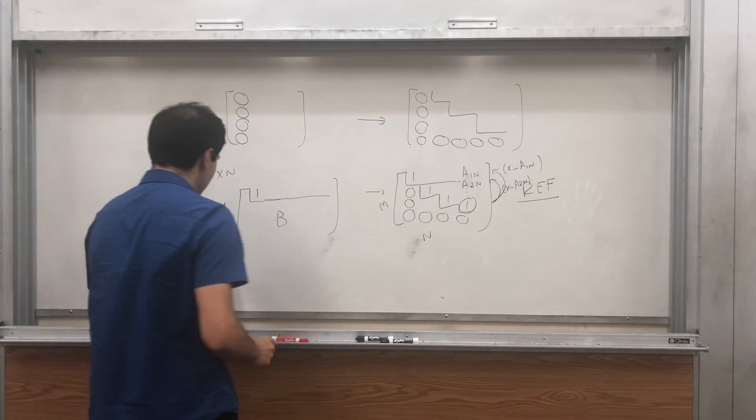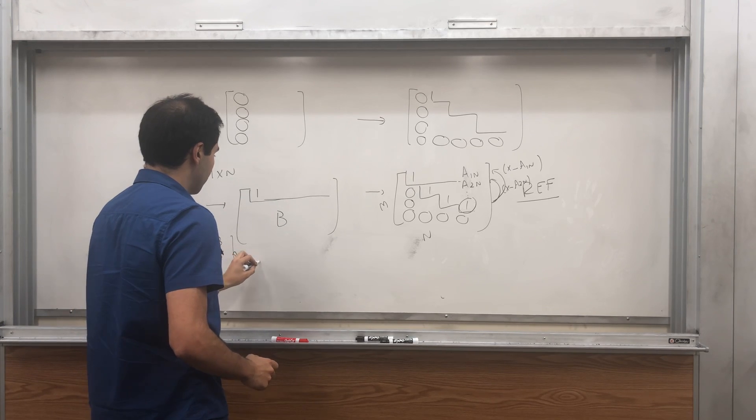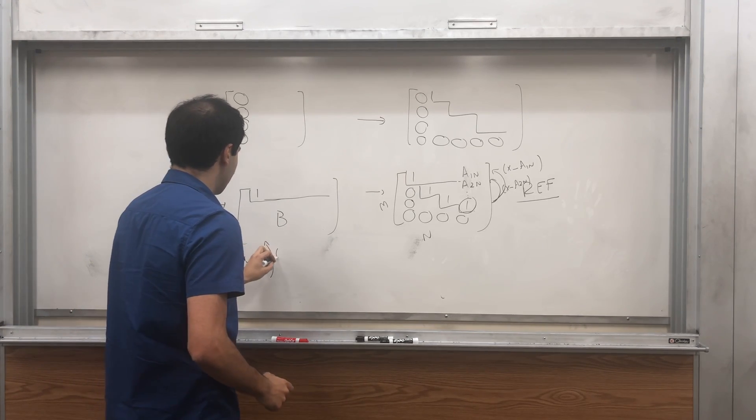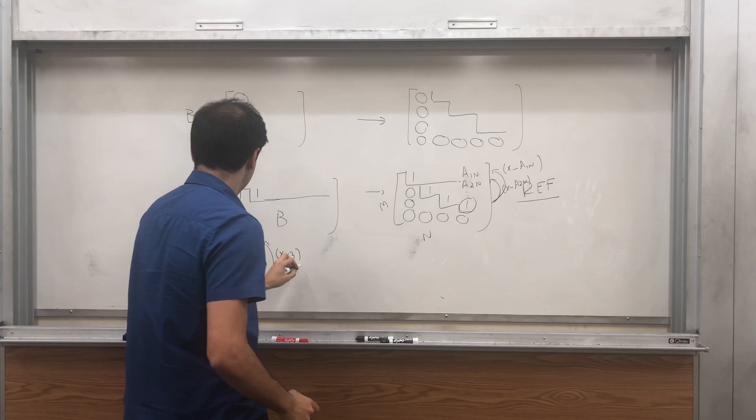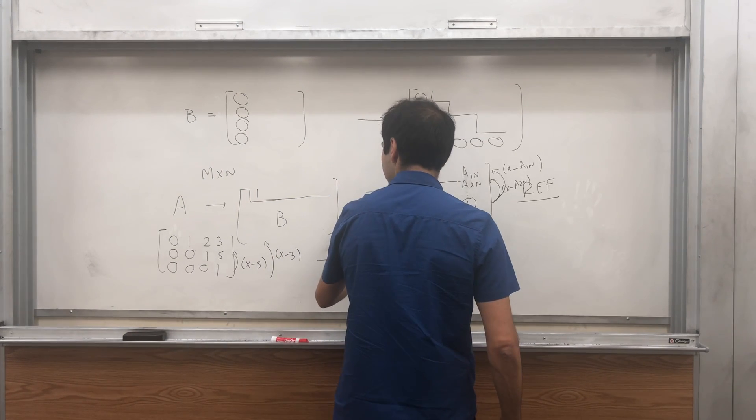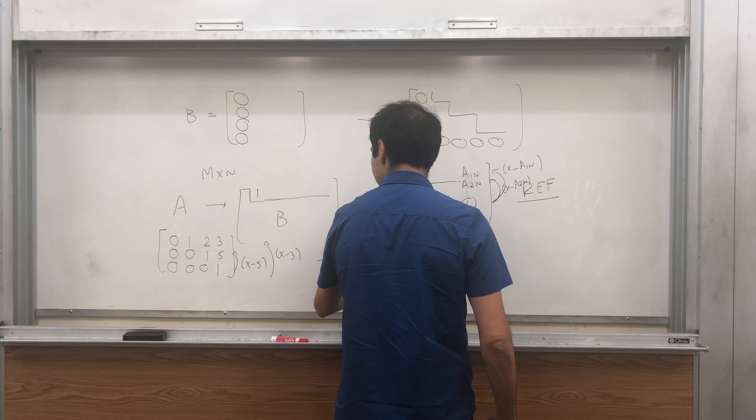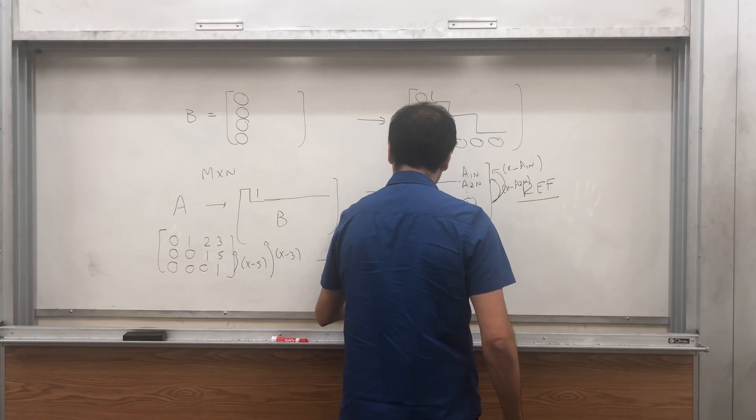Then you would take this entry and subtract a2n from this row, and subtract a1n from this row. So for example, here, you would subtract 5, and you would subtract 3. And then you get something like 0, 1, 2, 0, 0, 0, 1, 0, 0, 0, 0, 1.